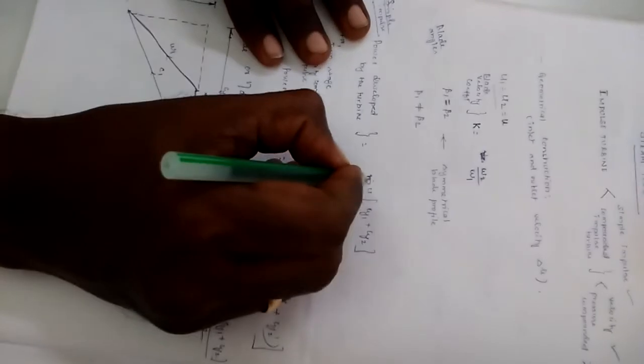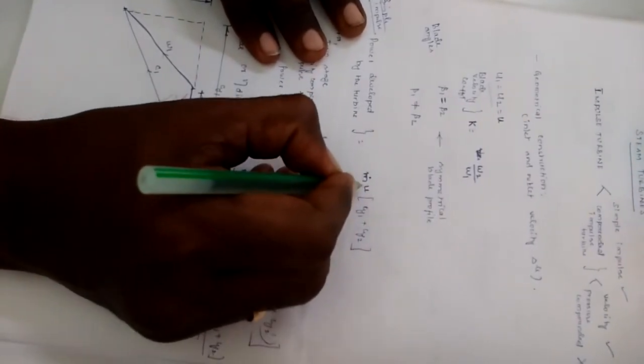This is the formula which we use right from our unit 1: m into u into cy1 plus cy2. This is your tangential component, and this is blade velocity. This is the mass flow rate of the steam that is flowing.